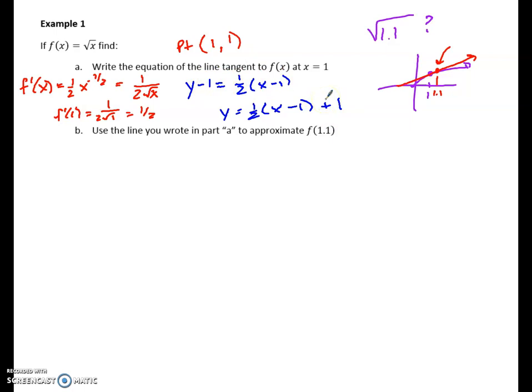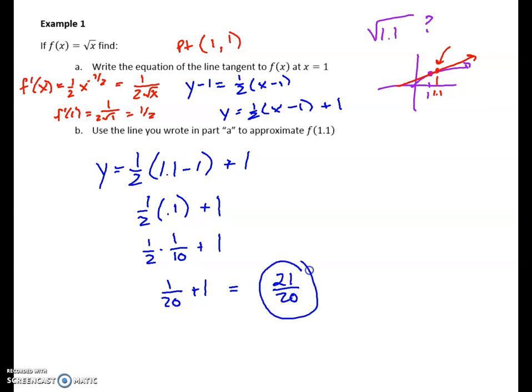Okay, so then how do I use that to approximate it? Well, remember, this tangent line, as long as you're close to 1, is pretty close to what the curve is. So I'm just going to plug in 1.1 here and see what 1.1 would give me. Let's see. Half of this is 0.1 plus 1. Now, I would change this to a fraction, which is 1 tenth. So I get 1 20th plus 1, which is 21 20ths, which is a much closer approximation than me trying to do this as a decimal.